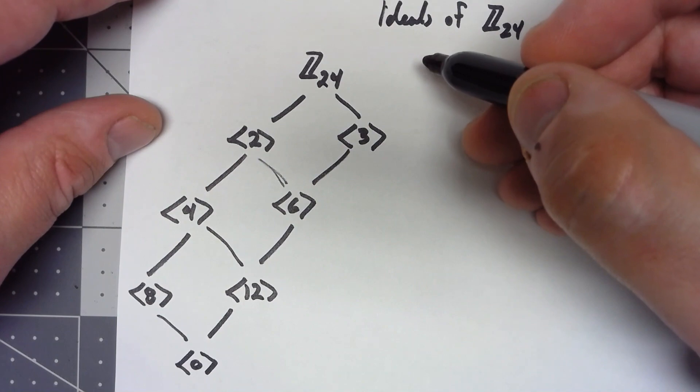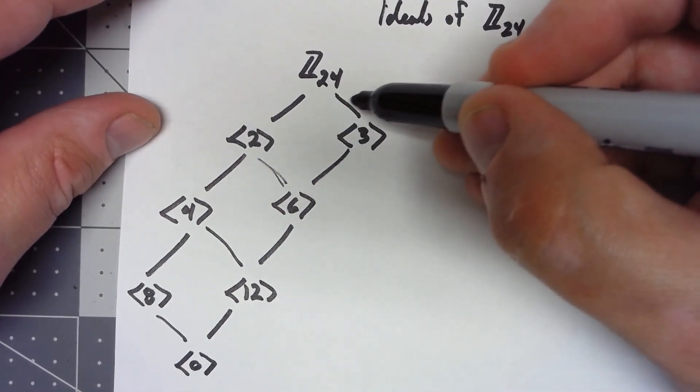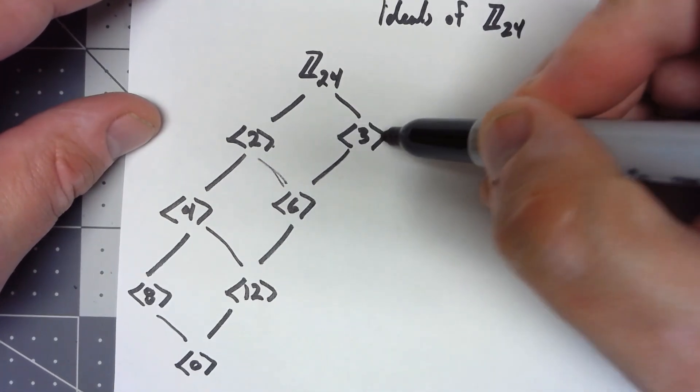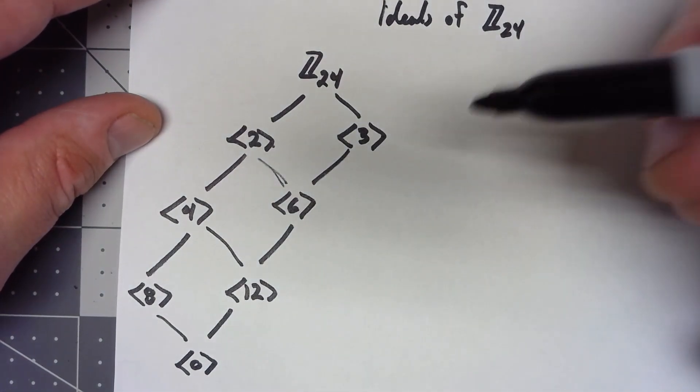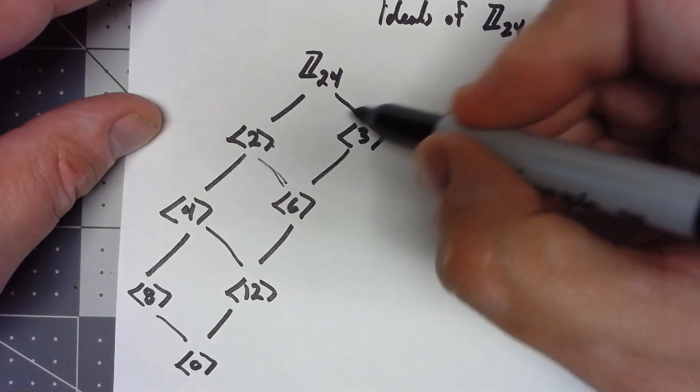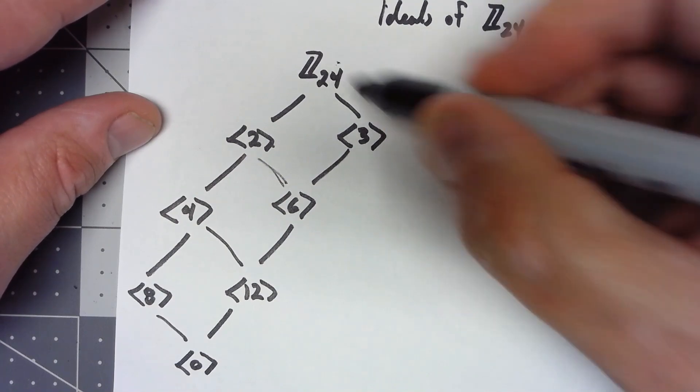Now looking at this, just going by this thing, these two things, the ideal generated by 2 and the ideal generated by 3, are both maximal ideals here. There's no ideal in between here and the entire ring.